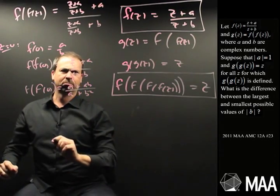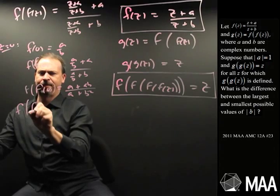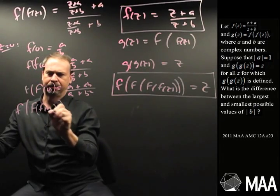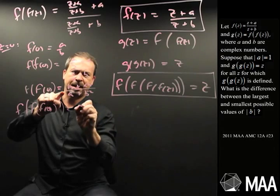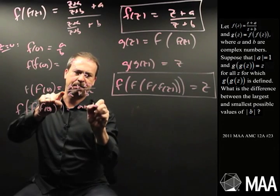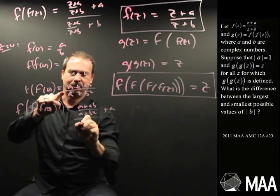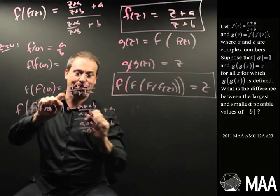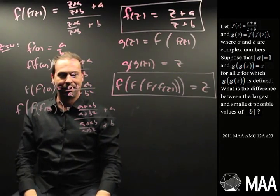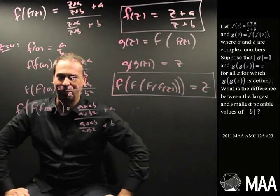Should I do the third one? Why not? f of f of f of 0 — we put that result in for the input, giving a plus ab over a plus b squared plus a, all over a plus ab over a plus b squared plus b. And now it's looking pretty horrible. I don't think I want to work with that.